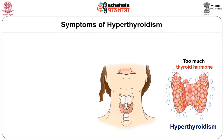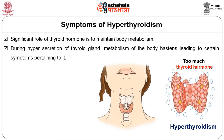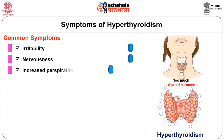Here are some symptoms of hyperthyroidism. A significant role of thyroid hormone is to maintain body metabolism. During hypersecretion of the thyroid gland, the metabolism of the body hastens, leading to certain symptoms. The most common symptoms of hyperthyroidism are irritability, nervousness, increased perspiration, heart racing, protruded eyeballs, difficulty in sleeping, and anxiety.